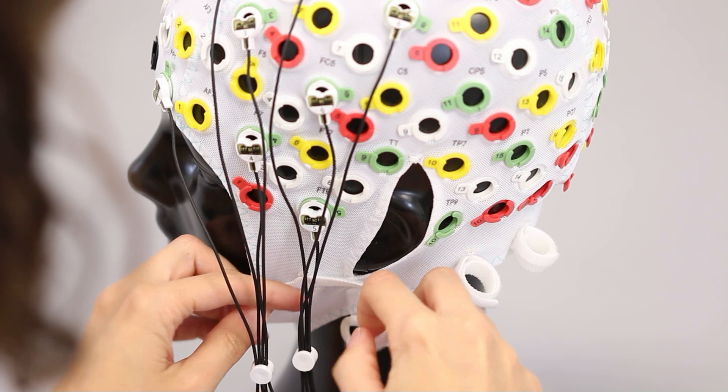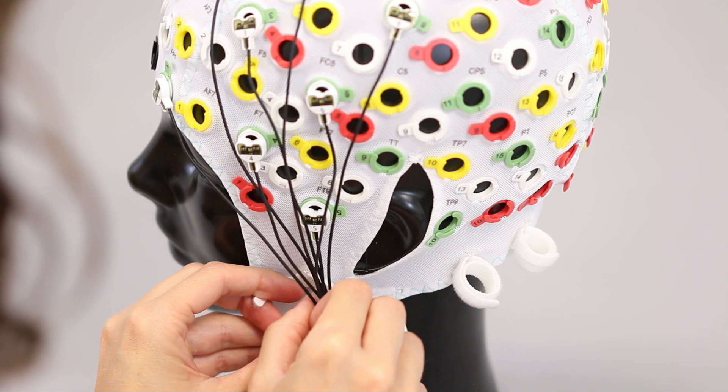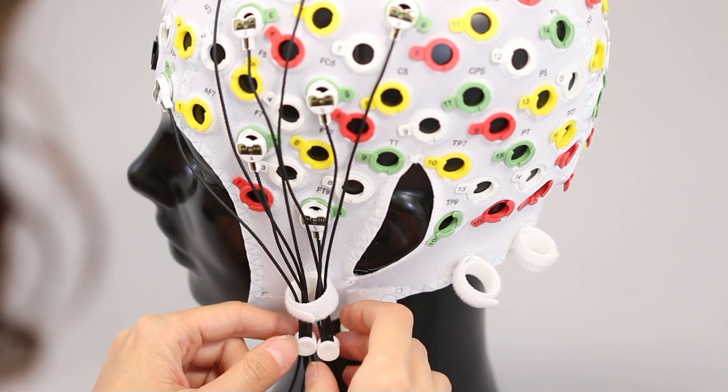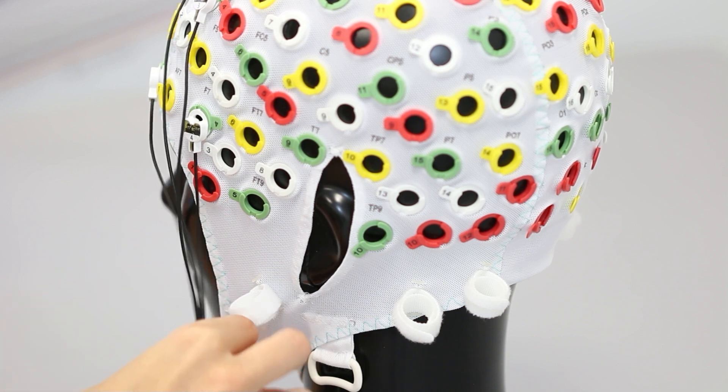route the lead wires into the next closest Velcro strap to stabilize them. This will also work as a strain relief. Adjust the length of the cables again if needed with the cable guides and aim to have them just below the Velcro strap.